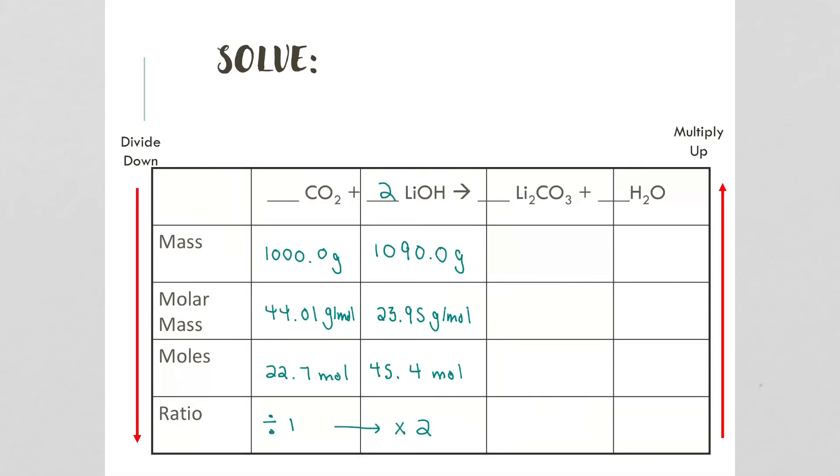Now if we wanted to figure out the amount of lithium carbonate or water that was produced, we can also carry that information over. For this one, we divide it by 1, there's a coefficient of 1, so we multiply it by 1.